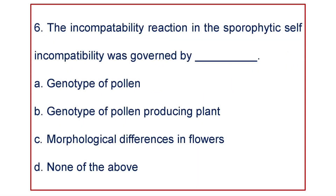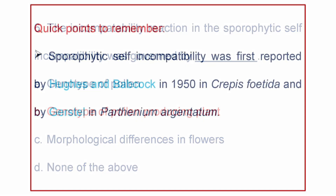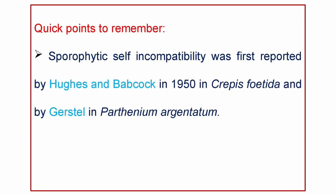Next question. The incompatibility reaction in the sporophytic self-incompatibility was governed by: A. Genotype of pollen, B. Genotype of pollen producing plant, C. Morphological differences among flowers, or D. None of the above. In sporophytic self-incompatibility, the incompatibility reaction is governed by genotype of pollen producing plant. Quick points: Sporophytic self-incompatibility was first reported by Hughes and Babcock in 1950 in Crepis foetida, and by Gerstil in Parthenium argentatum in the same year.